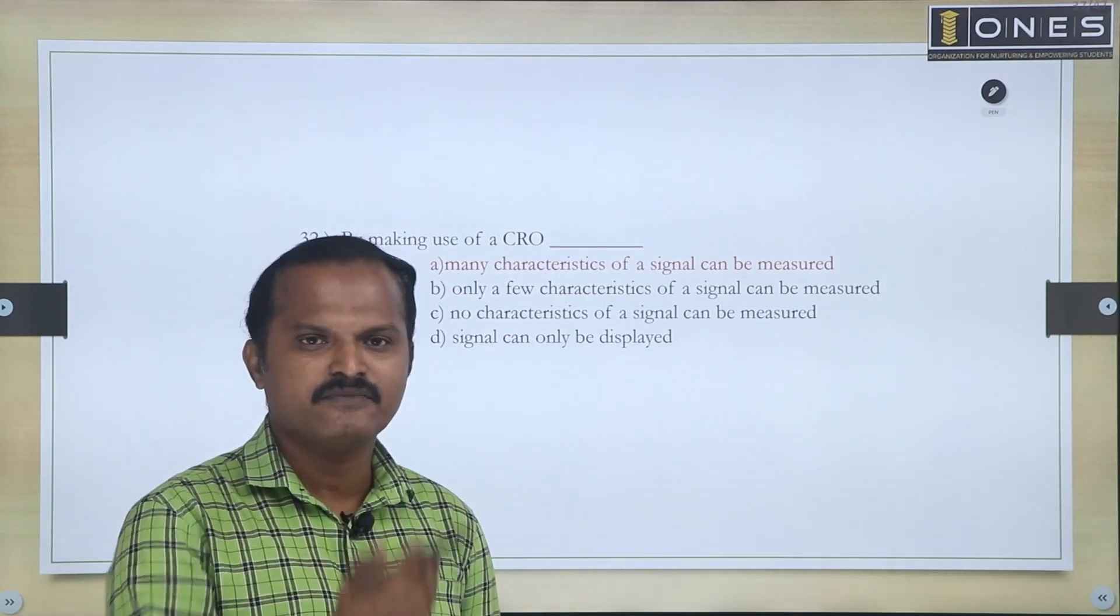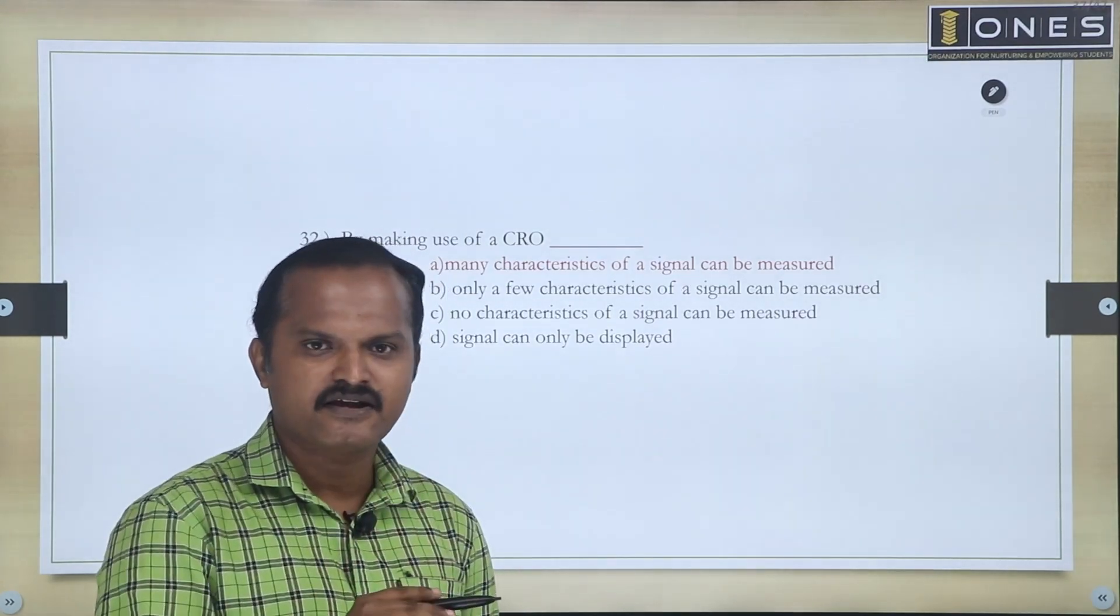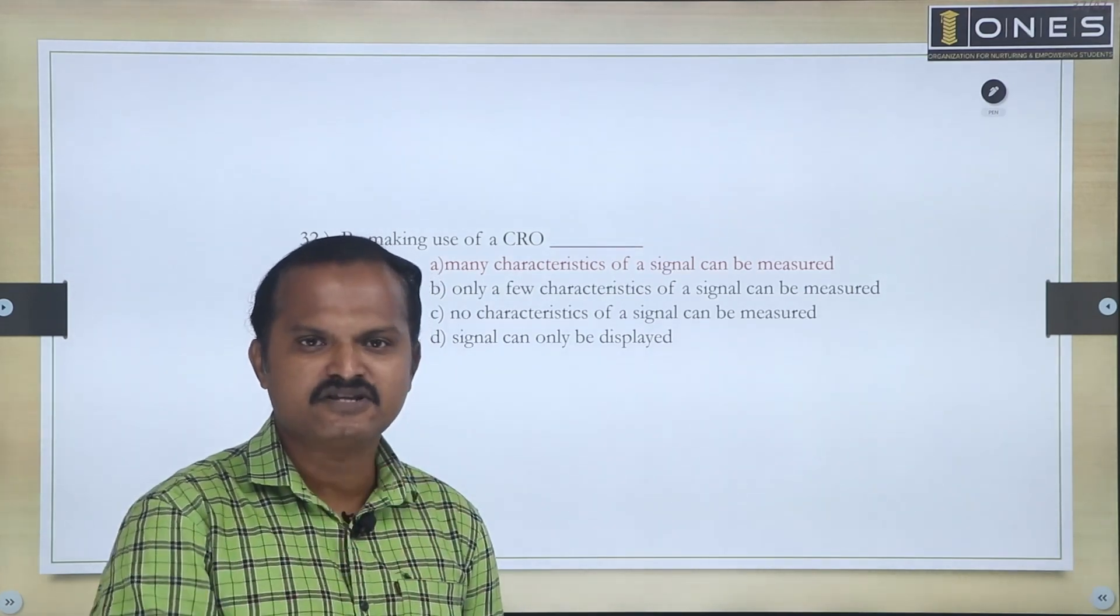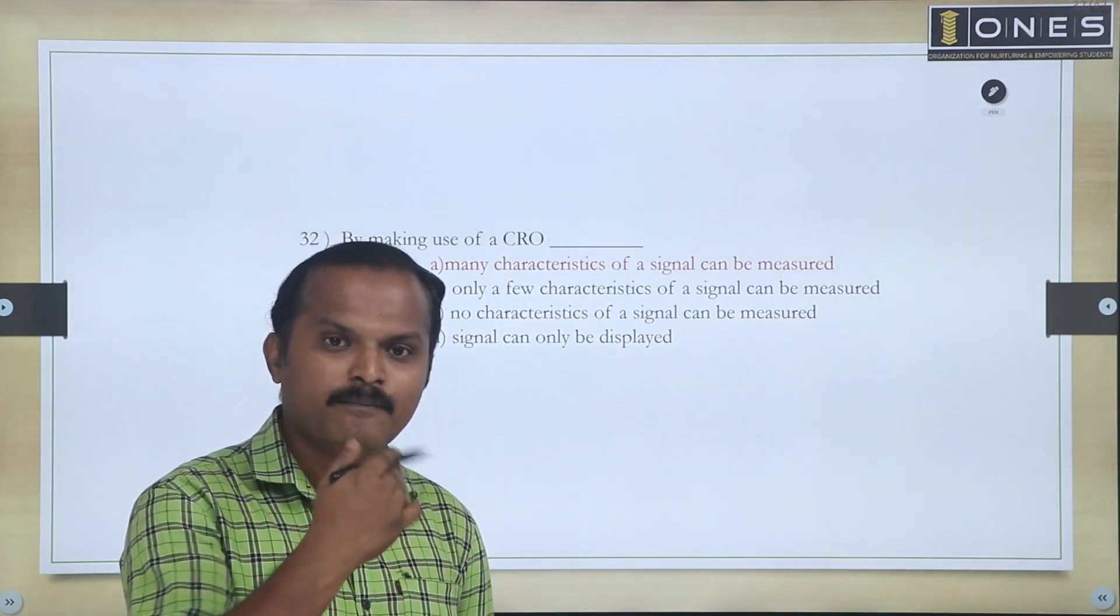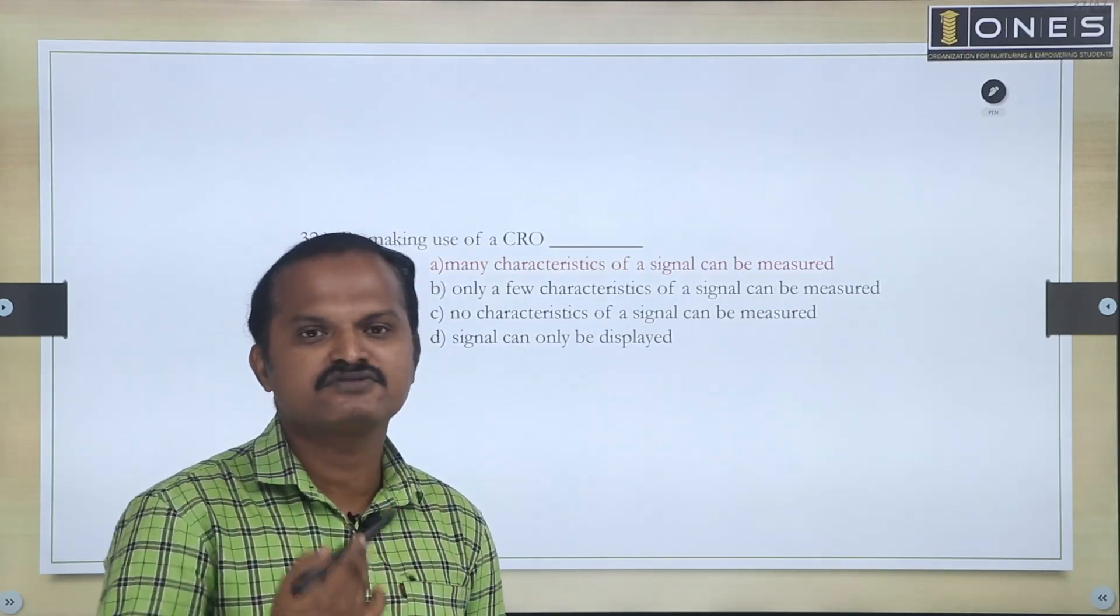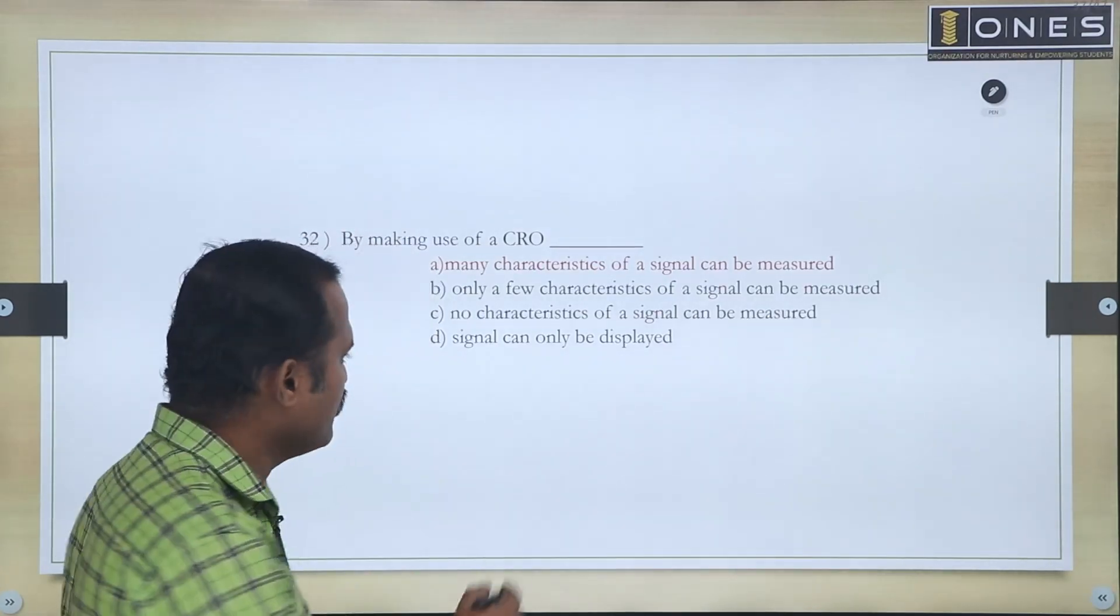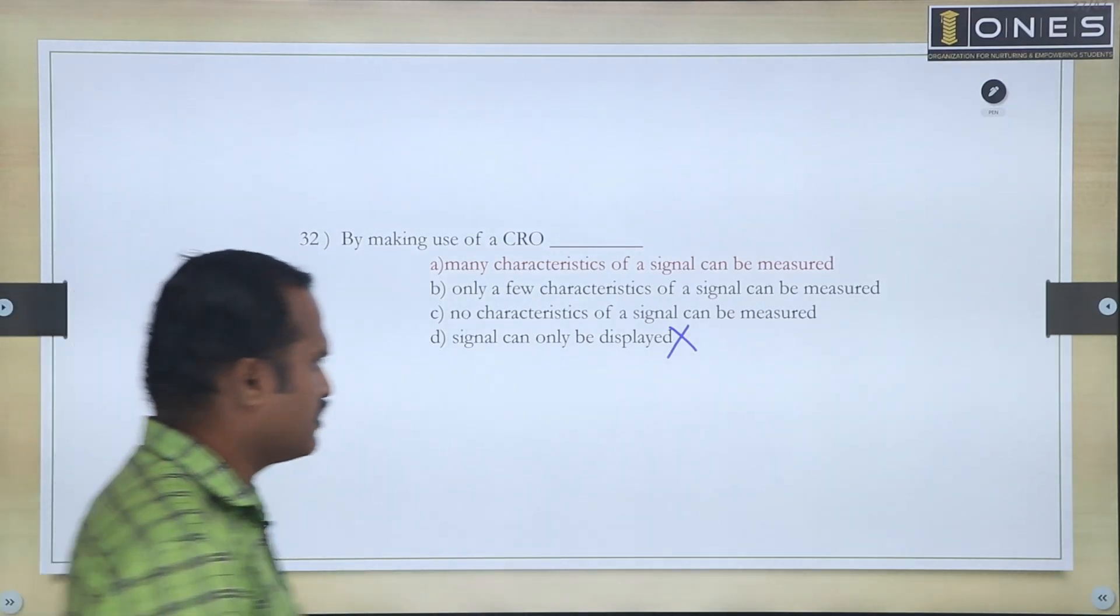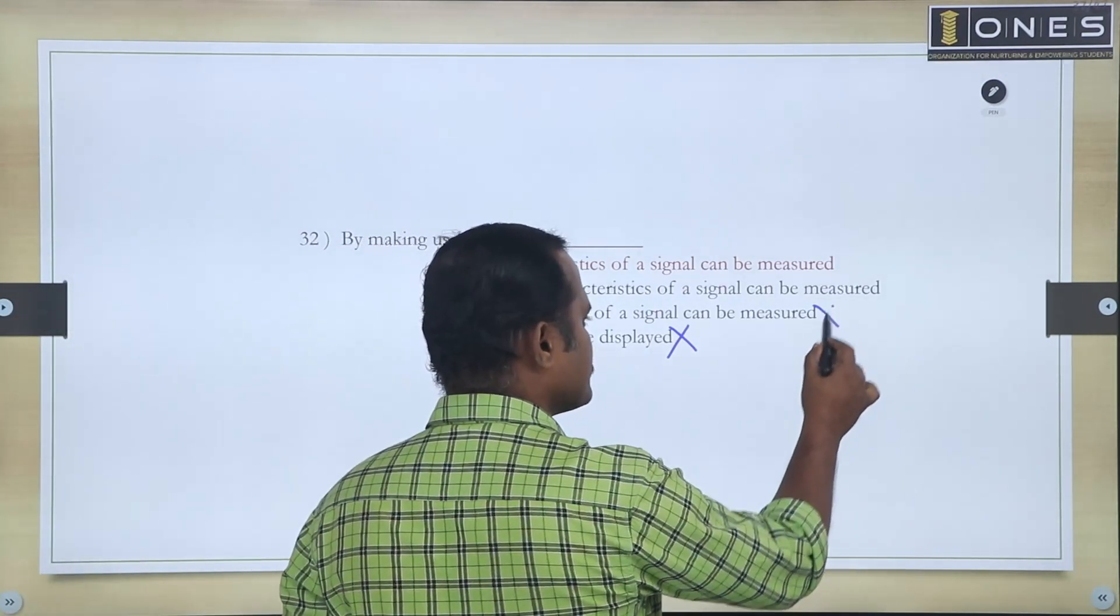The D choice says signal can only be displayed. Why? Because we're using sinusoidal waveform where the waveform is not just a display. And now as well, all these outputs - amplitude measure, positive amplitude and negative amplitude measure, time period measure.